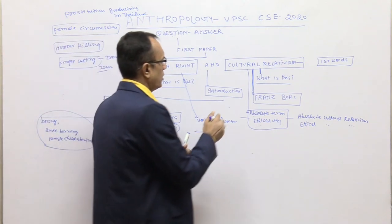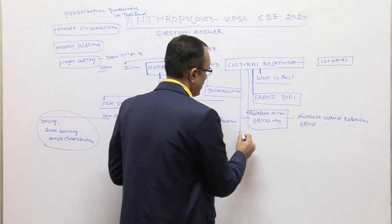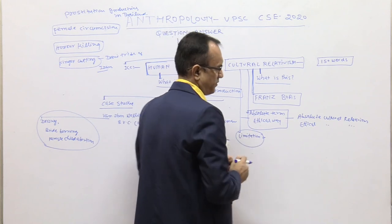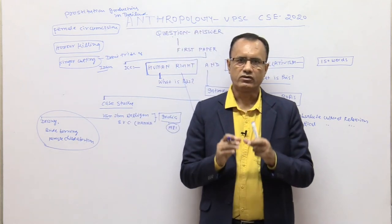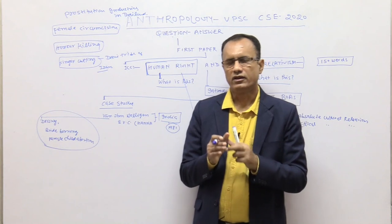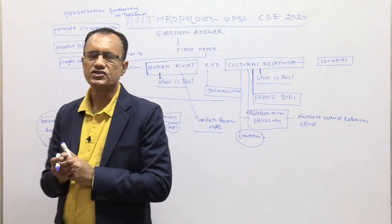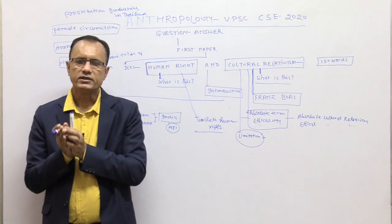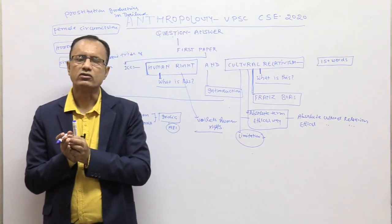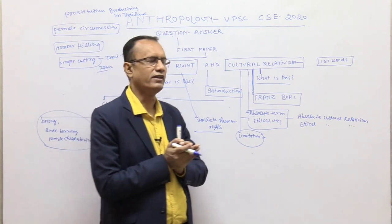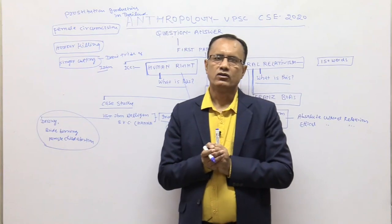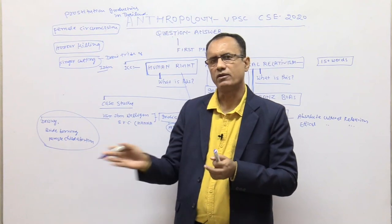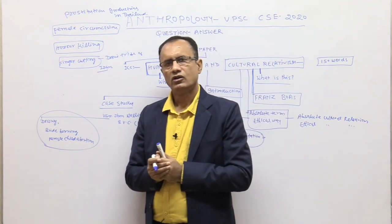Here we are talking about some important limitations of that concept. If we accept the concept of cultural relativism in totality — in absolute terms — then it violates human rights, because there are many cultural practices available in many societies which violate human rights. We have mentioned these types of examples.